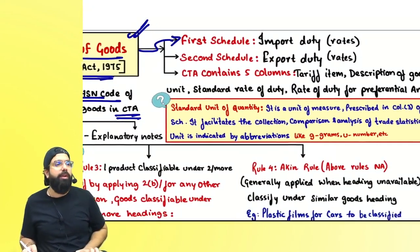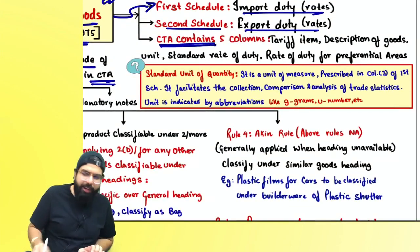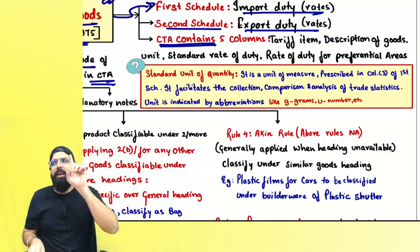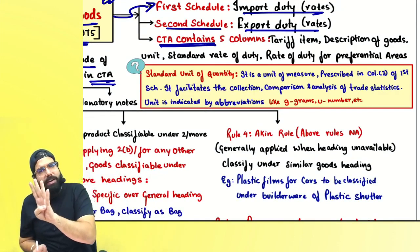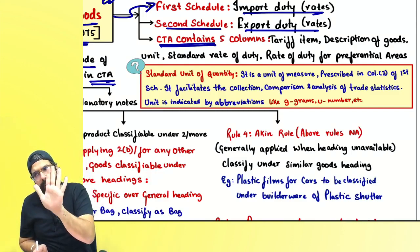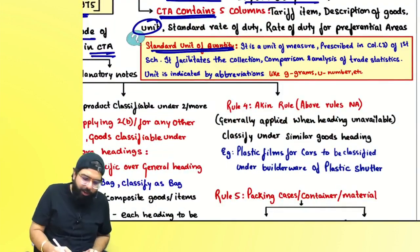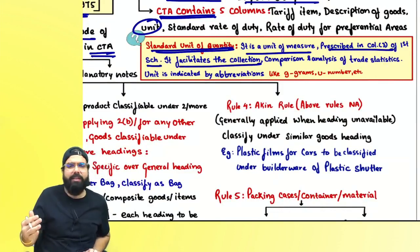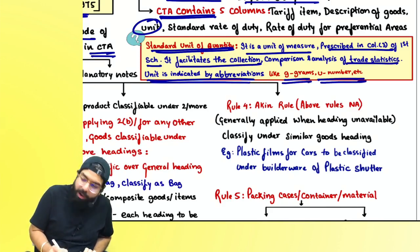The first schedule gives you import duty and the second schedule gives you export duty. When you see the schedule in the Custom Tariff Act, you will be able to see five columns: tariff item, description of the goods, unit, standard rate of duty, and preferential rate of duty. Unit means standard unit of quantity — a unit of measure prescribed in column number three of the first schedule. It facilitates collection, comparison and analysis of trade statistics, indicated by abbreviations like G for grams, U for numbers, etc.